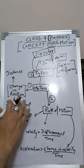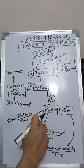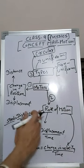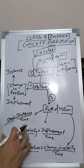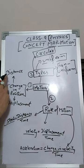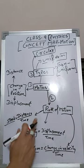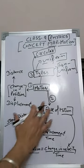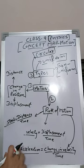The second topic we will discuss in this chapter is rate of motion. As motion changes with time, it leads to three concepts: first is speed, second is velocity, and third is acceleration. Speed is distance upon time, velocity is displacement upon time, and acceleration is change in velocity upon time.